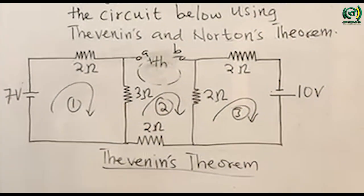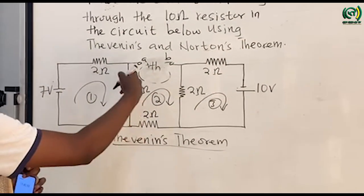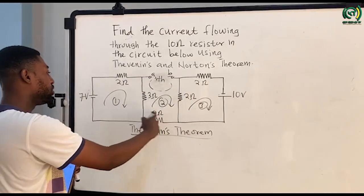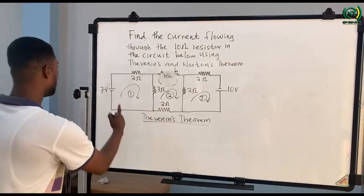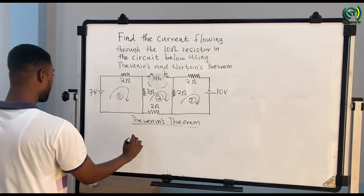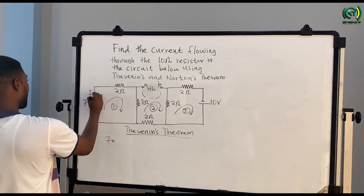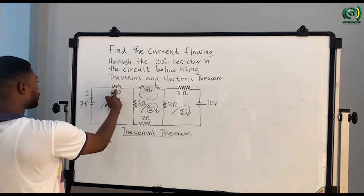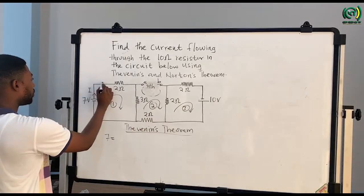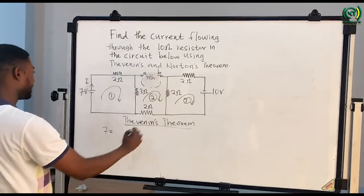We need to calculate Thevenin's voltage, and in doing so I need to know the current flowing through the 3 ohm resistor, the current through the 2 ohm resistor, and the current through the other 2 ohm resistor. For loop one, the 7 volt source will drive a current I. When it gets to the junction, since we have an open circuit, the current will flow through the 3 ohm resistor only, because this side is open so no current flows there.